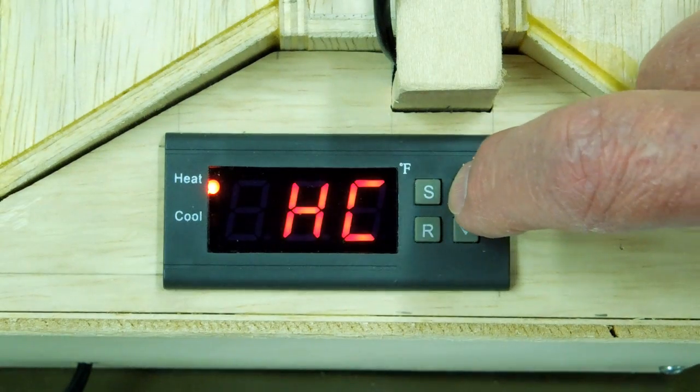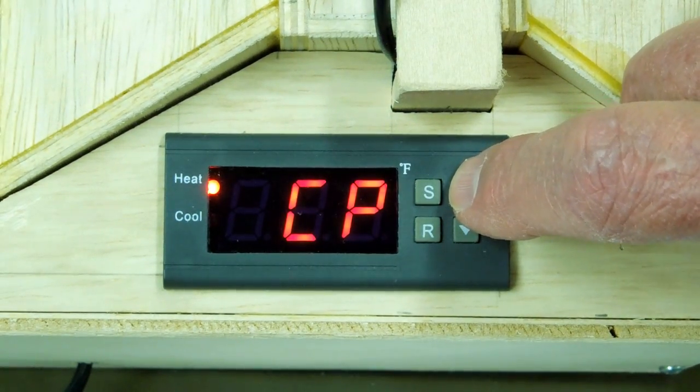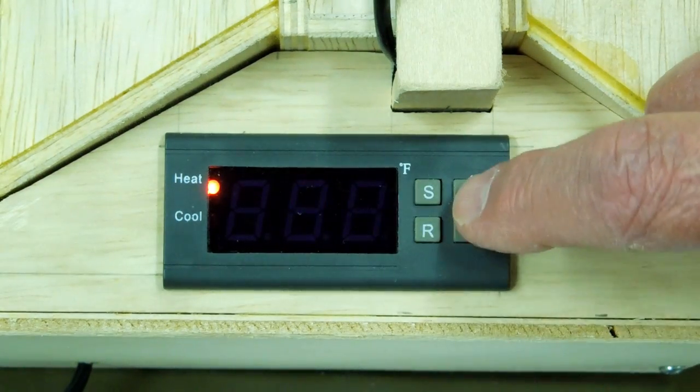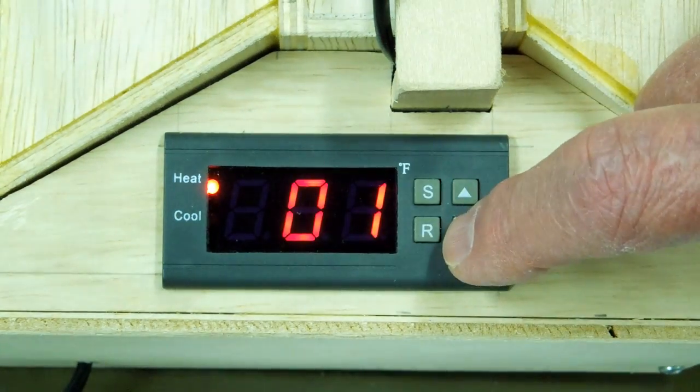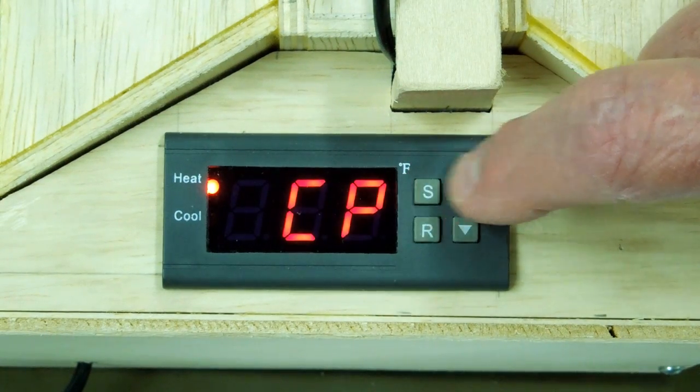Press that again. We come to CP which is temperature difference. I push S. I have it set at 1 degree. I can make that 2 degrees, and I can't go any lower than 1 on the Fahrenheit controller. Back to CP.